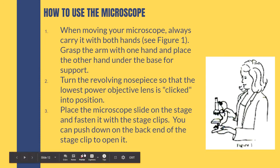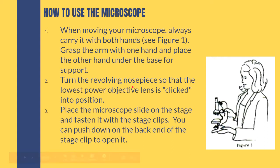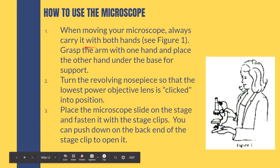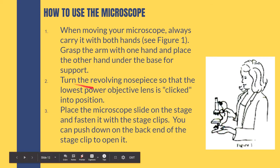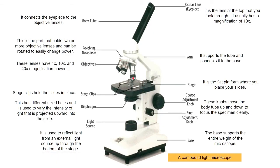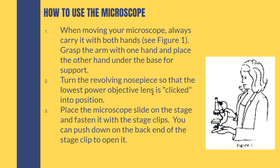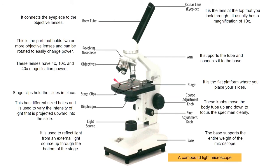These are the steps on how to use the microscope. To be honest, the best way to learn is when you're actually using one. Always carry the microscope with two hands — one holding the arm, one holding the base. Turn the revolving nosepiece and you'll know it's in the right place when you feel a click. Place the microscope slide on the stage and fasten it using the stage clips.